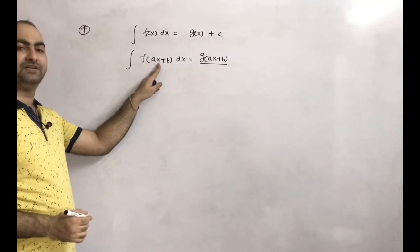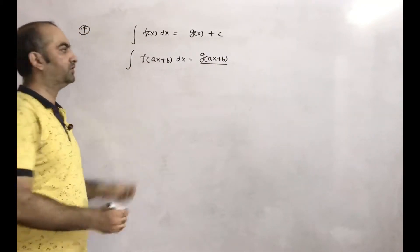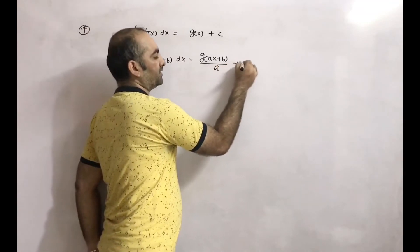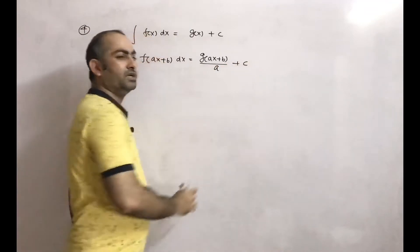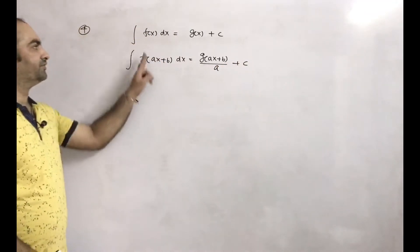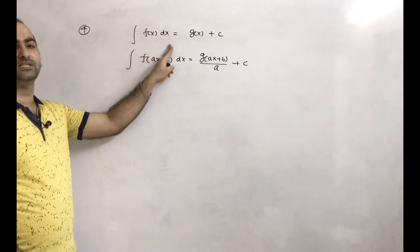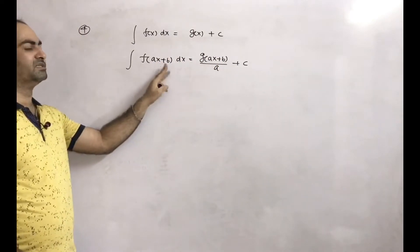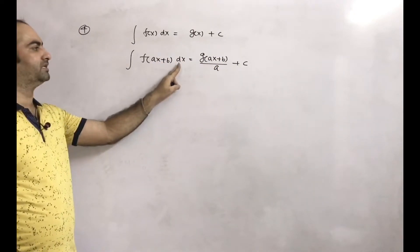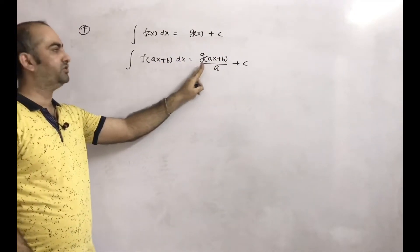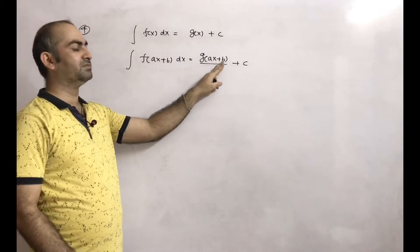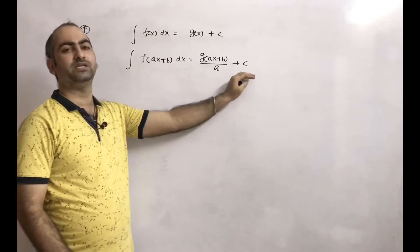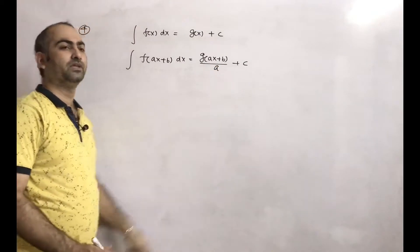Coefficient of x is a. So, divided by a plus c. So, integration of f(x)dx is g(x)+c, then integration of f(ax+b)dx will be g(ax+b) divided by a plus c.